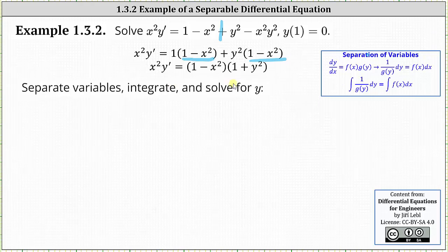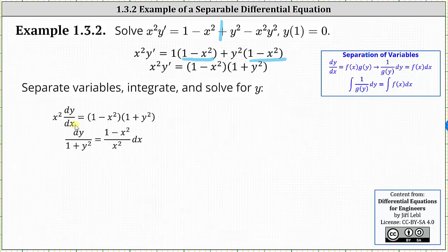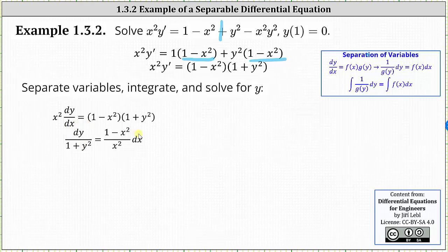Now we separate the variables, integrate, and solve for y. Writing y prime as dy/dx gives us x squared dy/dx equals the quantity one minus x squared times the quantity one plus y squared. Dividing both sides by x squared and by the quantity one plus y squared, then writing in differential form, gives us dy divided by the quantity one plus y squared equals the quantity one minus x squared divided by x squared, dx.